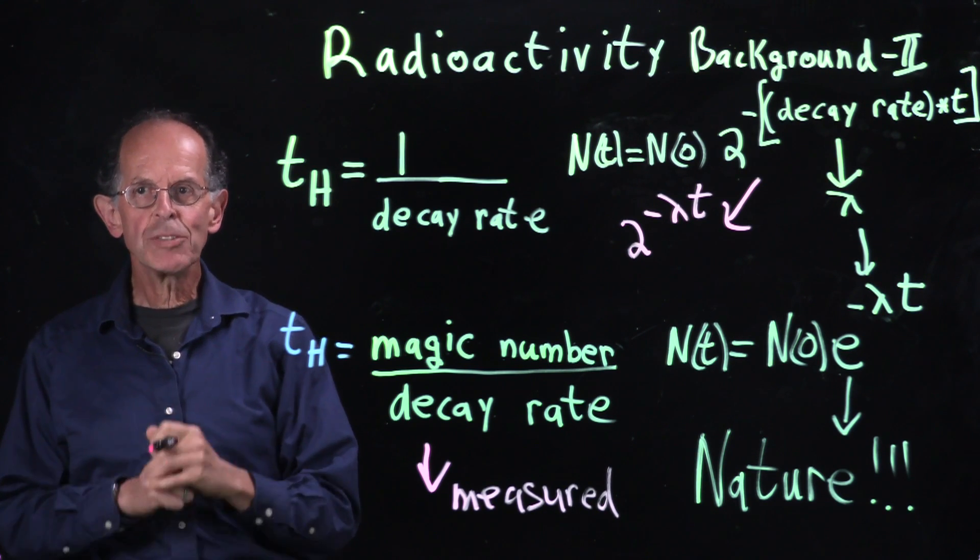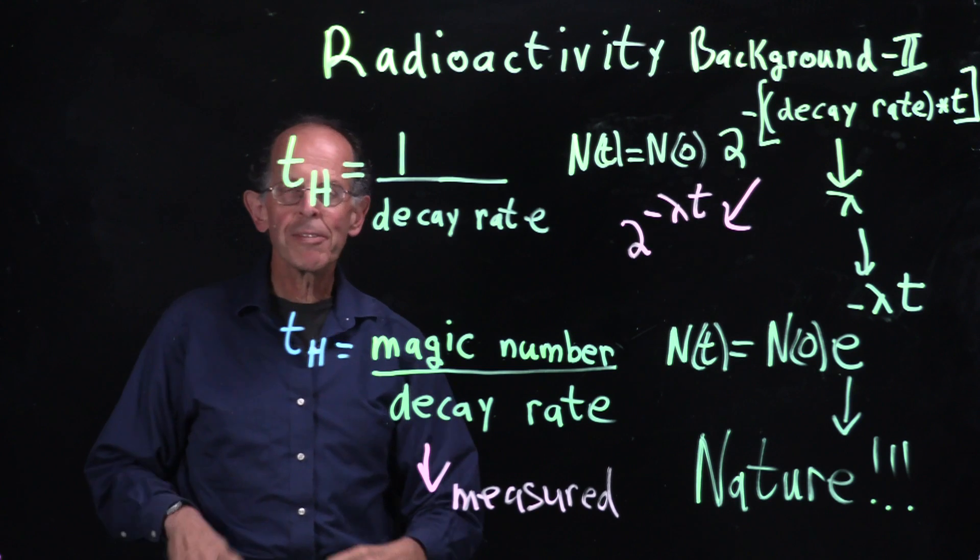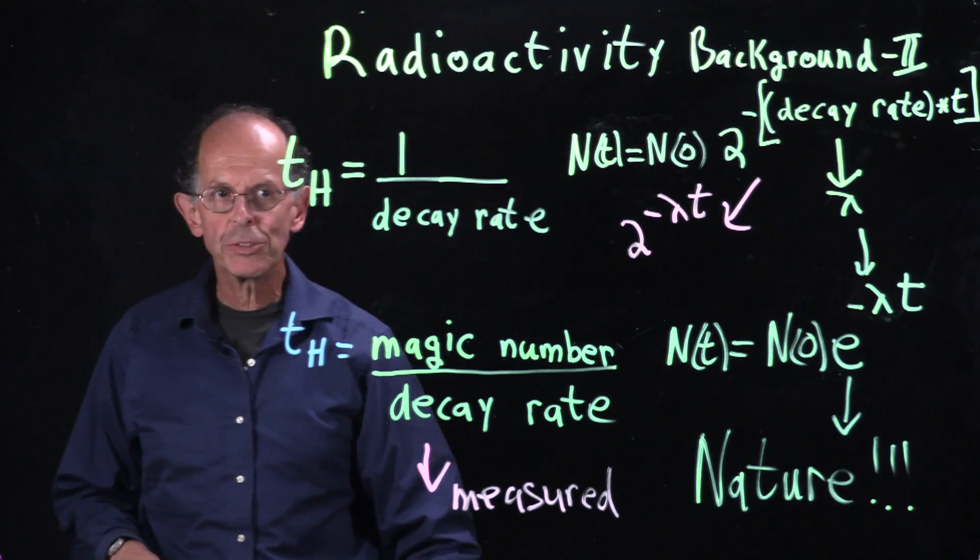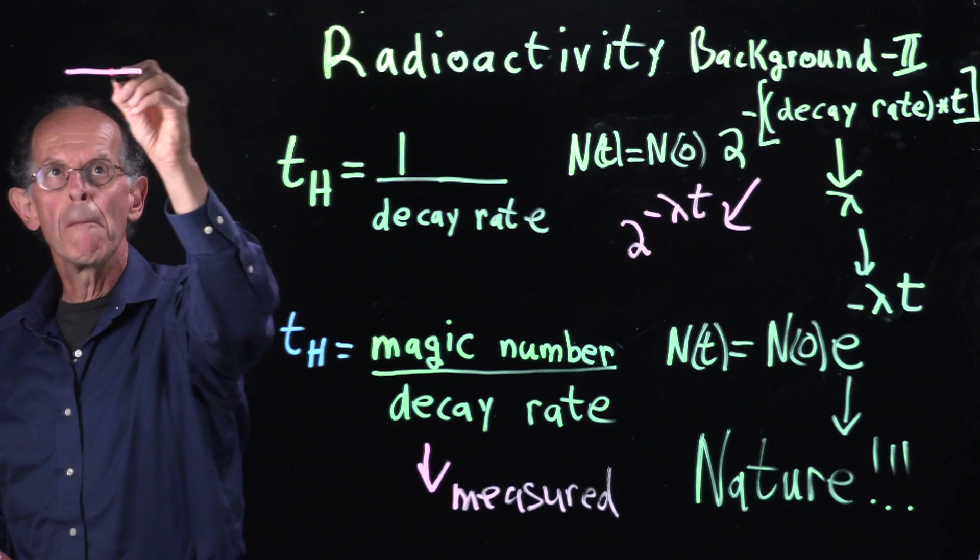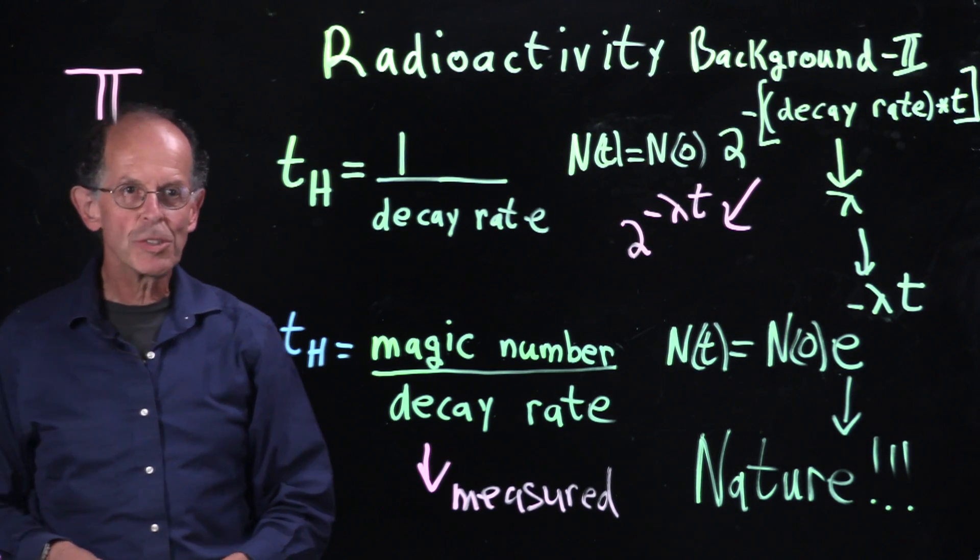Nature is not so nice as powers of 2. There are lots of numbers in nature that are weird. One of them is pi, related to circles.